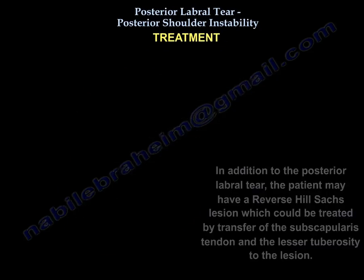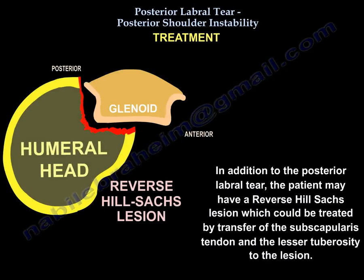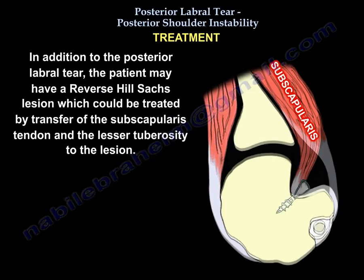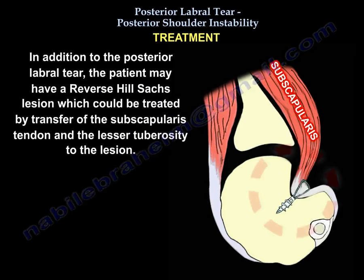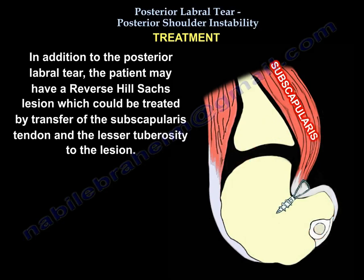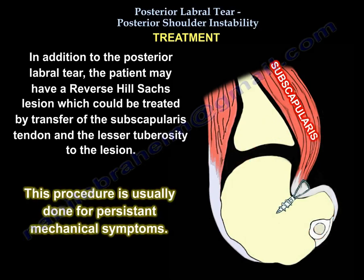In addition to the posterior labral tear, the patient may have a reverse Hill-Sachs lesion, which could be treated by transfer of the subscapularis tendon and the lesser tuberosity to the lesion. This procedure is usually done for persistent mechanical symptoms.